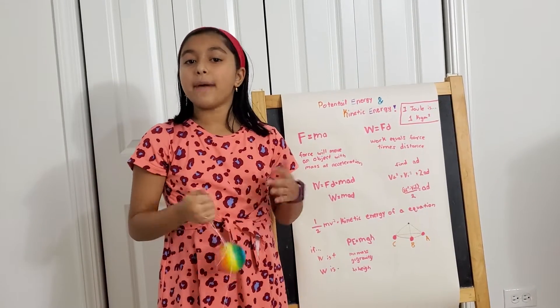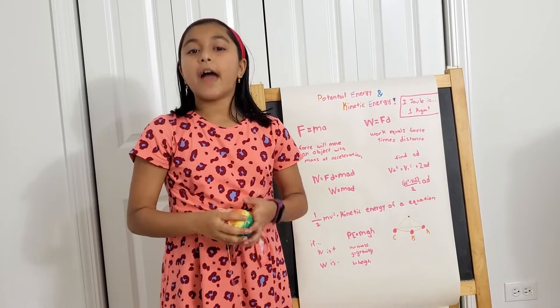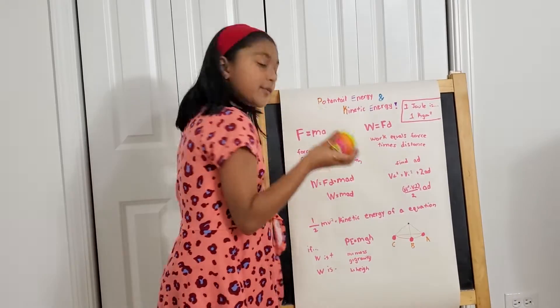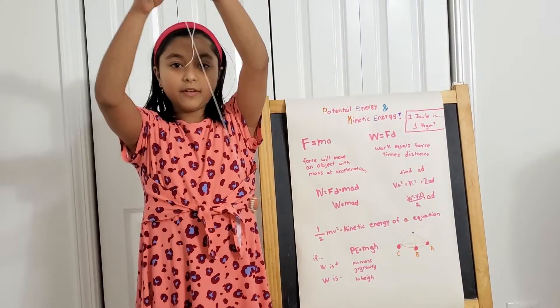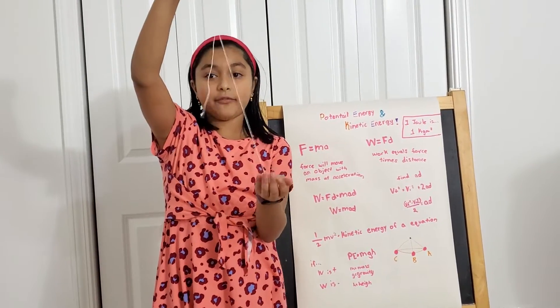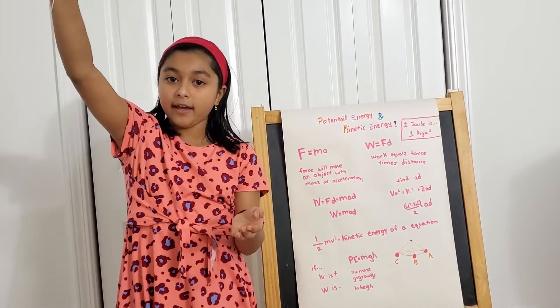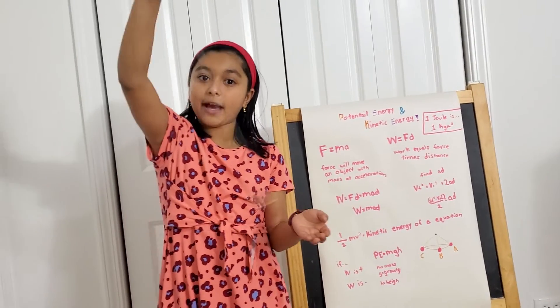But no matter what the mass of the object is, the energy will be the same. For example, this was a bigger ball, but let's say we use a foosball racer. You see, the mass is way different, but it still goes. A is potential, now it's going to be back to C.